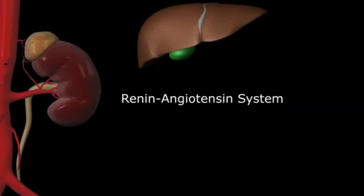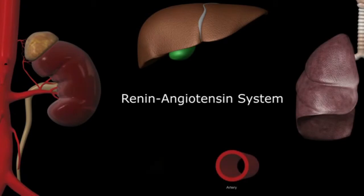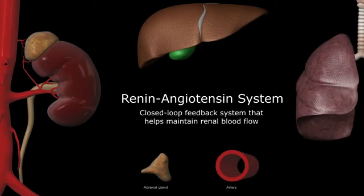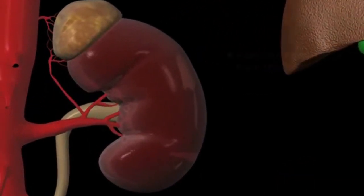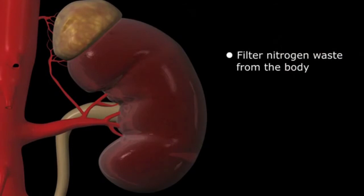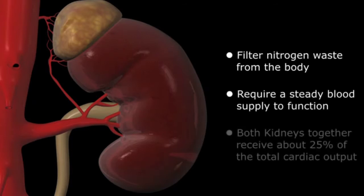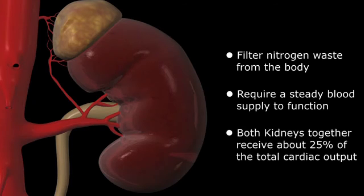Involving the kidneys, liver, lungs, blood vessels, and adrenals, the renin-angiotensin system is a closed-loop feedback mechanism that helps maintain renal blood flow. The kidneys are designed to filter nitrogen waste products of protein metabolism. To function normally, they need a steady flow of blood, receiving about 25% of total cardiac output. A drop in blood pressure — either systemically from heart failure or locally from narrowing of the renal arteries — causes the kidney to secrete a chemical called renin into the bloodstream.